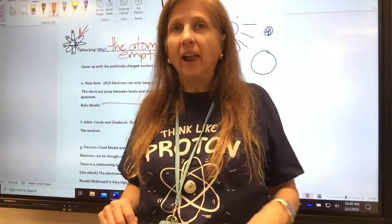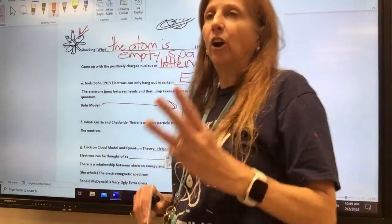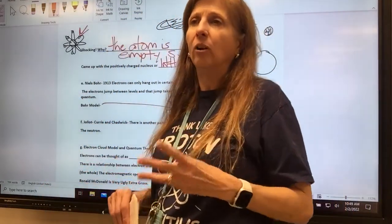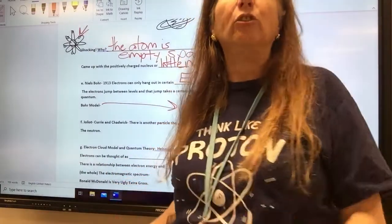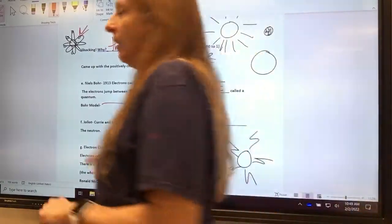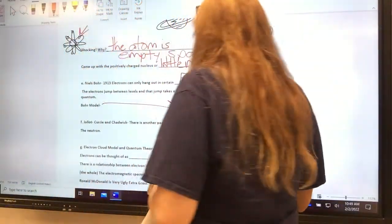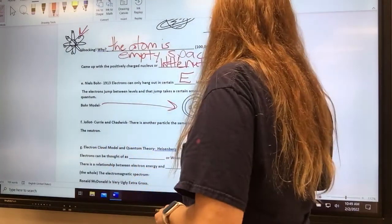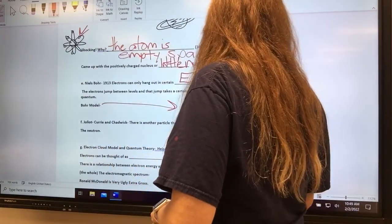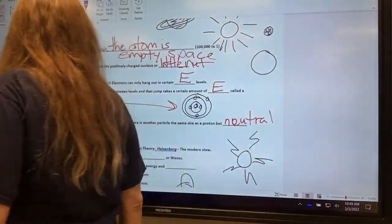Her mom was the most famous scientist in the world, so she hyphenated with her husband's name, Joliot. He was her lab partner, just like how her mom and dad were lab partners. And they had another lab partner named Chadwick. They discovered in their lab that there was a third subatomic particle, the proton, the electron, but they discovered the neutron.